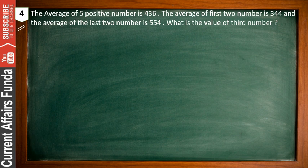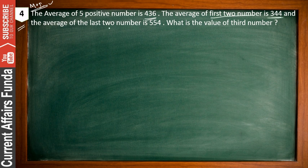Problem 4 is very important — this type of question appears frequently in modern exams including SSC CGL, Railway, and Bank exams. The average of 5 positive numbers is 436. The average of the first 2 numbers is 344, and the average of the last 2 numbers is 554. What is the value of the 3rd number? Assume the five numbers are A, B, C, D, and E.